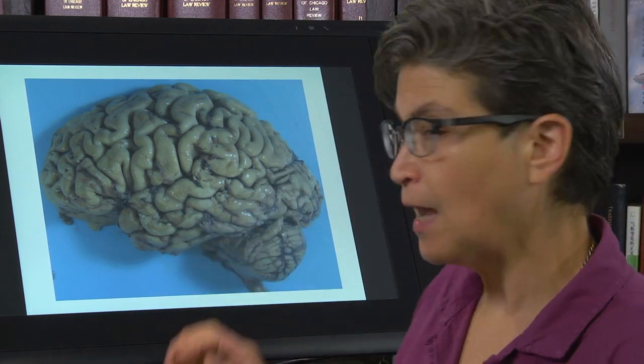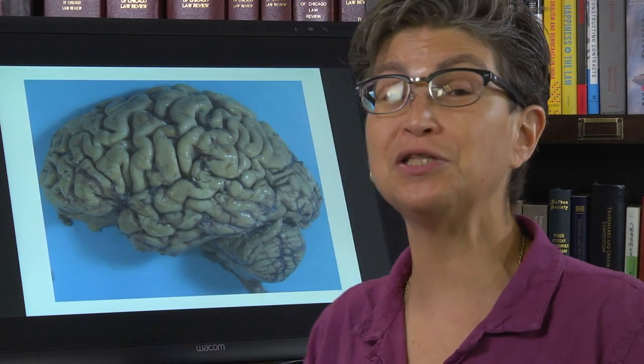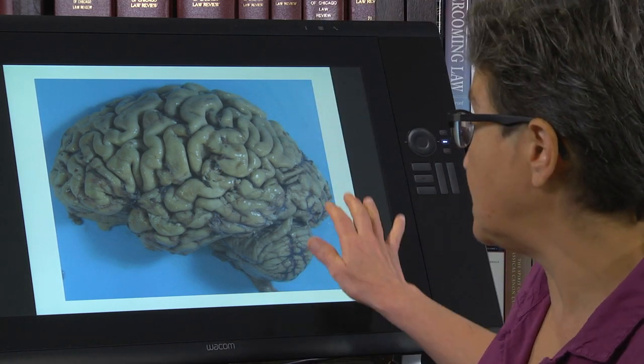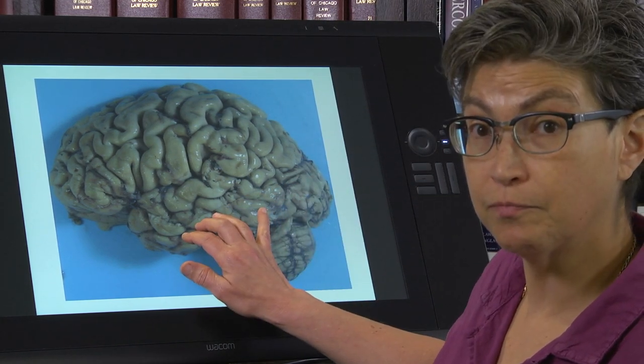The ventral stream goes to inferotemporal cortex and is involved in figuring out what you're seeing. This is the problem Dr. P had — he looked at an object and could describe a green cylinder with red polygons on top, but couldn't say what it was until he smelled it and knew it was a rose. That is called visual agnosia, and it is a deficit somewhere in the ventral stream.